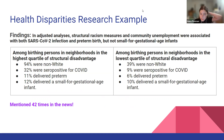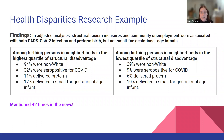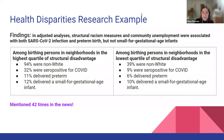Their findings were that structural racism measures and community unemployment were associated with both SARS-CoV-2 infection and preterm birth by neighborhood, but not small for gestational age infants. Among the more structurally disadvantaged or segregated neighborhoods, there were more people who were non-white, more who tested positive for COVID, more that delivered preterm, and slightly more that delivered small for gestational age infants — however, that number was not statistically significant. Although this study doesn't get at why these things are related, it does show a correlation and highlights differences between more and less structurally disadvantaged neighborhoods.